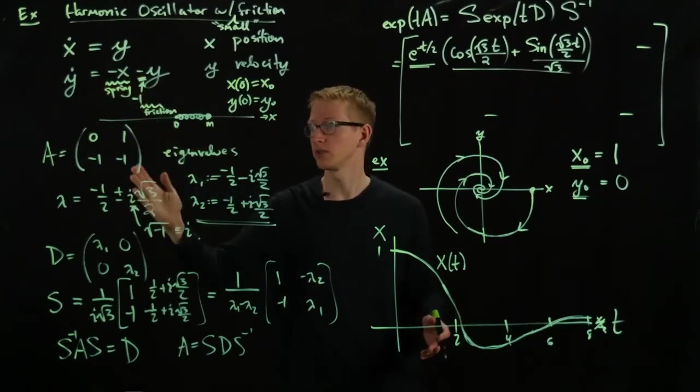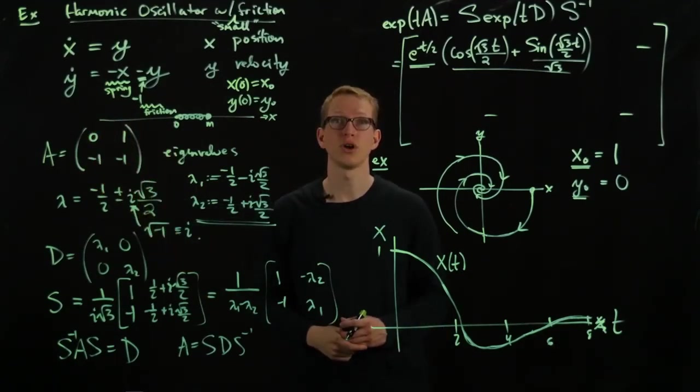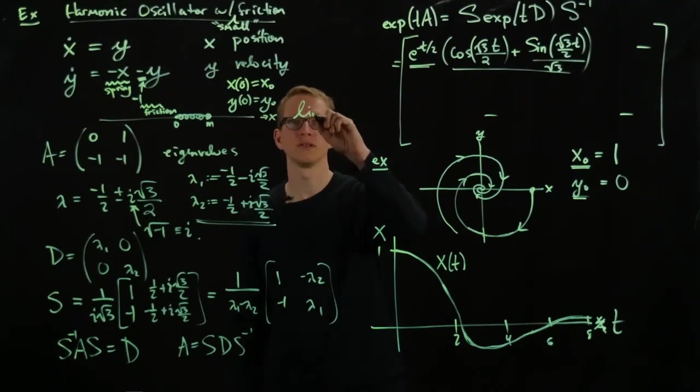And the matrix A, if you notice the matrix A here, is independent of time. Such systems are called linear autonomous systems.